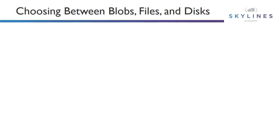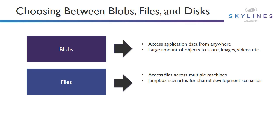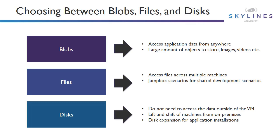Let's take a look at the decision criteria as we try to choose between blobs, files, and disks. Blobs are for storing large amounts of objects — images, videos, etc. — that we might want to access from anywhere. Files are more for accessing from multiple machines — jump box scenarios, or maybe a remote desktop where somebody wants to store a user profile. And then finally, disks are really associated with virtual machines attached to the operating system. Think of lift-and-shift scenarios when moving from on-premises, disk expansion for application installations, and lots of read-writes. That's when we would ultimately use disks.